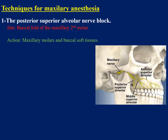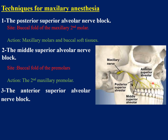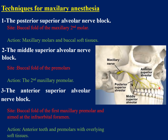Techniques for maxillary anesthesia. The posterior superior alveolar nerve block site is the buccal fold of the maxillary second molar; the action covers the maxillary molars and buccal soft tissue. The middle superior alveolar nerve block site is the buccal fold of the premolars, and the action covers the second maxillary premolar. The anterior superior alveolar nerve block site is the buccal fold of the maxillary premolar aimed at the infraorbital foramen, covering the anterior teeth and premolars with overlying soft tissue.